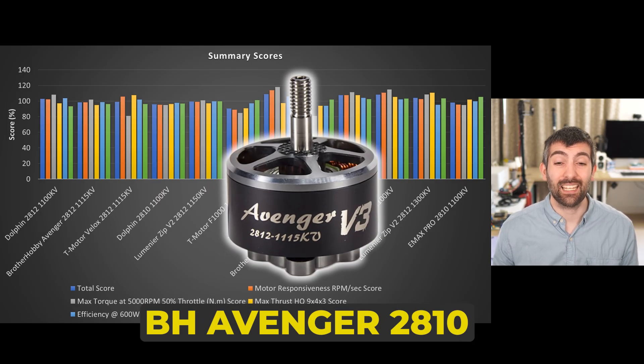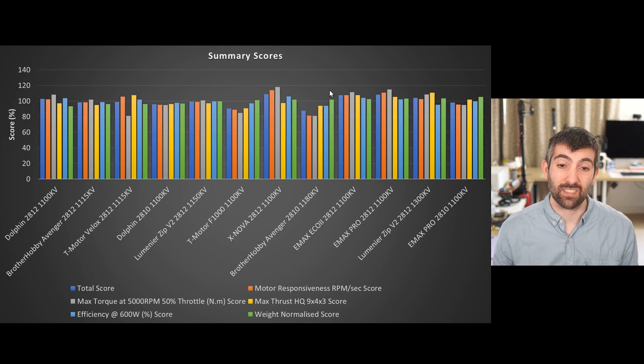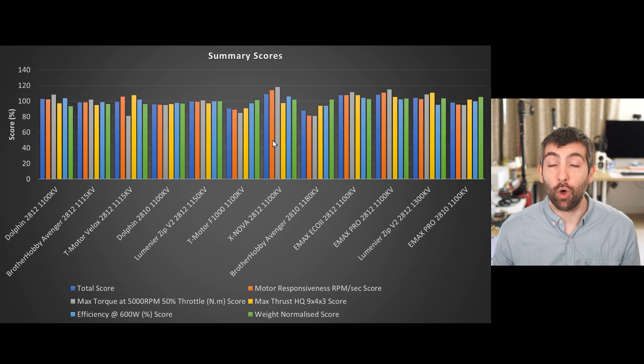The Brother Hobby Avenger 2810, I mean it's a very lightweight motor and that helps it in terms of weight normalized score, but as you can see its overall performance is not particularly impressive. The Xnova 2812 did really well on several metrics. It was really let down on its maximum thrust and it is a heavy motor and that pushes it down the list in terms of weight normalized score. If you're focused on efficiency and maybe you're looking to drive a prop that's even a bit larger than a nine inch prop, maybe a 9.5 or a 10 inch prop, that could be a really good choice because it's got the torque to handle that larger prop and the lower kV helps keep the current draw under control when you heavily load the motor.